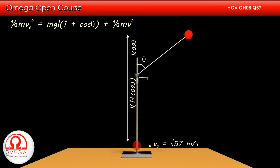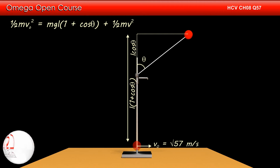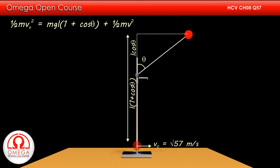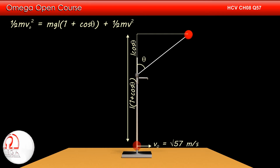If we take the lowest position of the particle to be the reference point for gravitational potential energy, then at the lowest point the gravitational potential energy of the system is zero. The kinetic energy of the particle at this position is ½MV₀². When the string is at an angle theta from the vertical, its height is L(1 + cos theta). Therefore, gravitational potential energy of the system is MgL(1 + cos theta). As the speed of the particle at this position is V, its kinetic energy is ½MV². As per the law of conservation of energy, the initial and final mechanical energy of the system must be equal.